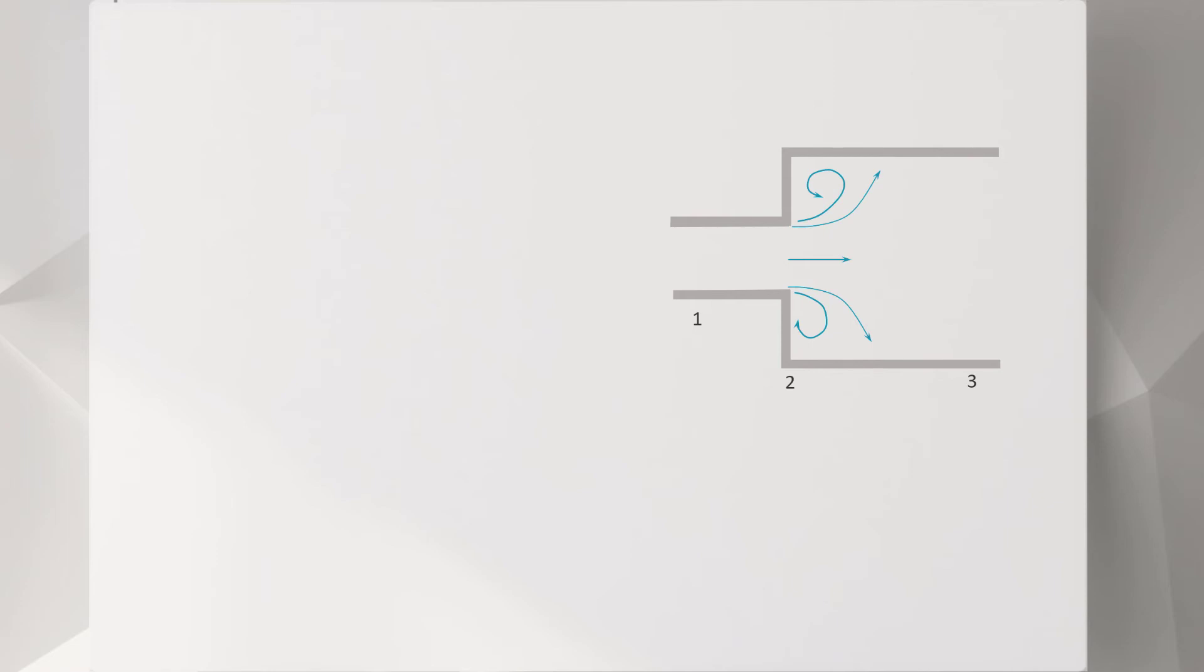Now, let's see how we can analyze this component. We first define a control volume that is bounded by location 2 and 3 and the side walls of the larger pipe. The velocity of the fluid entering the control volume is V1, while the fluid exits the domain at velocity V3. Also, we assume that the pressure along location 2 is constant.